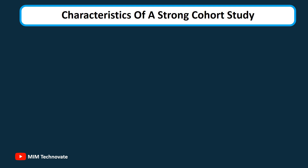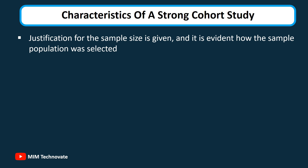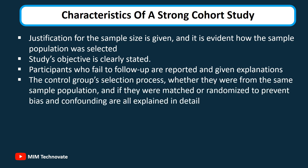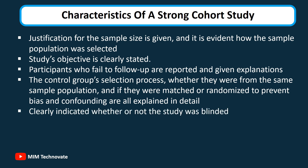Characteristics of a strong cohort study: Justification for the sample size is given, and it is evident how the sample population was selected, along with the inclusion and exclusion criteria. The sample group is a true representation of the population it is taken from. Participants who fail to follow up are reported and given explanations. The control group selection process — whether they were from the same sample population and if they were matched or randomized to prevent bias and confounding — is explained in detail. It is clearly indicated whether or not the study was blinded, and there was strict adherence to methodology.